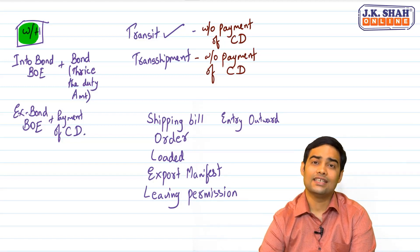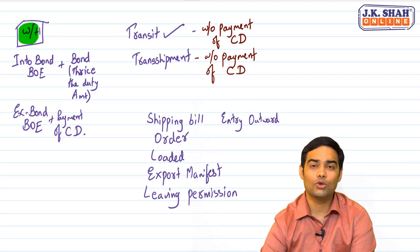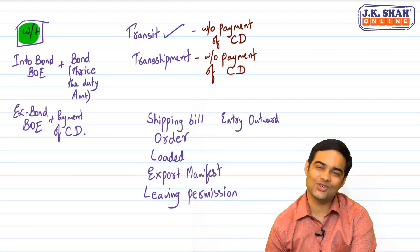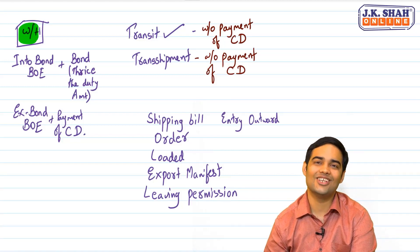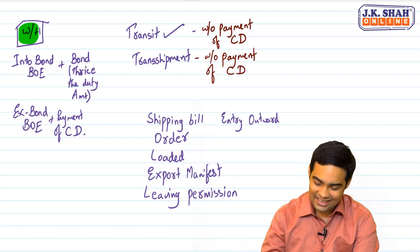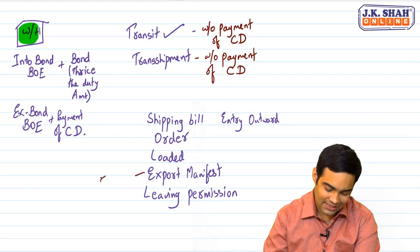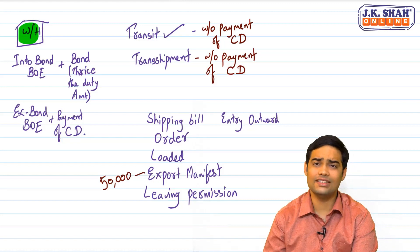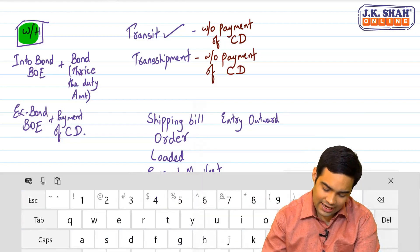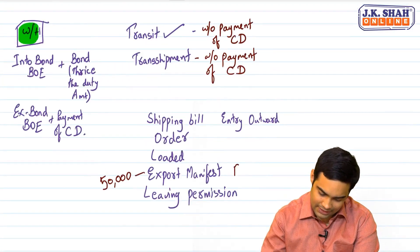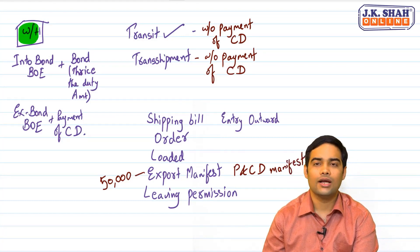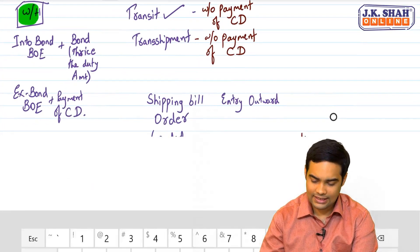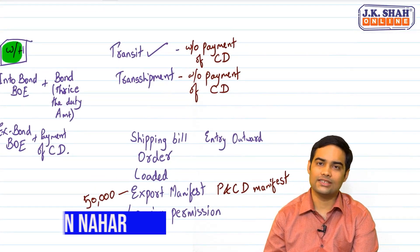The vessel then takes a leaving permission from the proper officer, with a declaration that any custom duty payable has been paid. If some goods are wrongly loaded and cannot be removed, the person in charge must declare they will bring those goods back next time. If you don't file the export manifest, penalty of 50,000 applies. There is also a Passenger and Crew Departure Manifest, with the same penalty for non-filing.